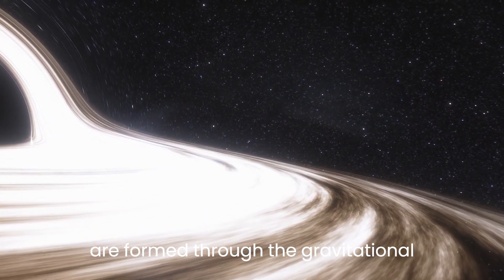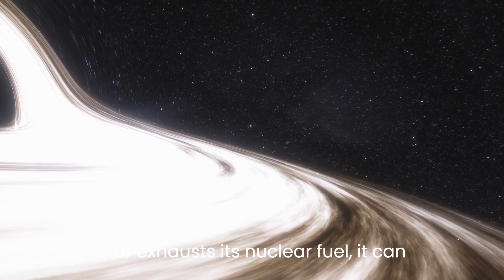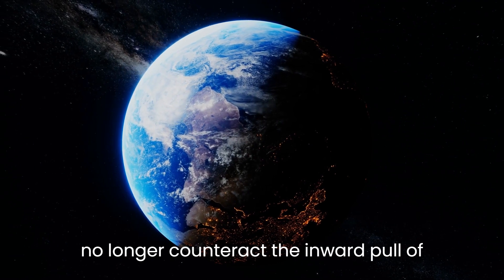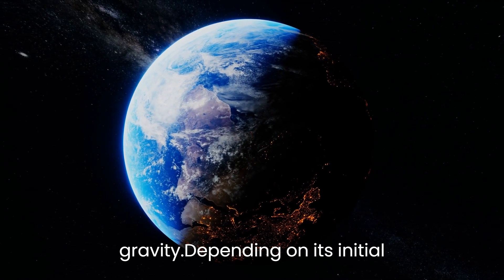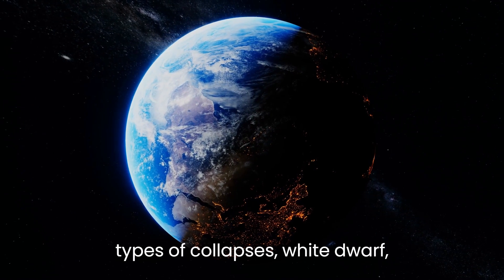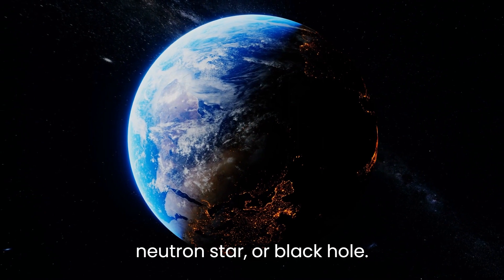Black holes are formed through the gravitational collapse of massive stars. When a star exhausts its nuclear fuel, it can no longer counteract the inward pull of gravity. Depending on its initial mass, the star may undergo one of three types of collapses: white dwarf, neutron star, or black hole.